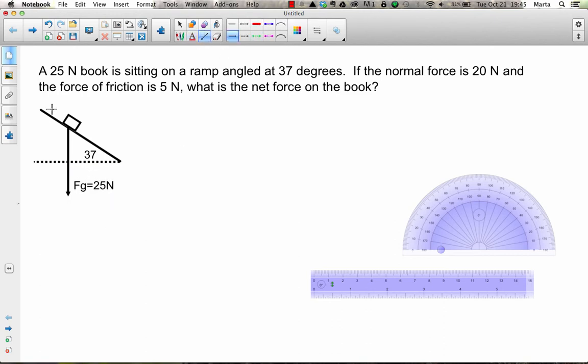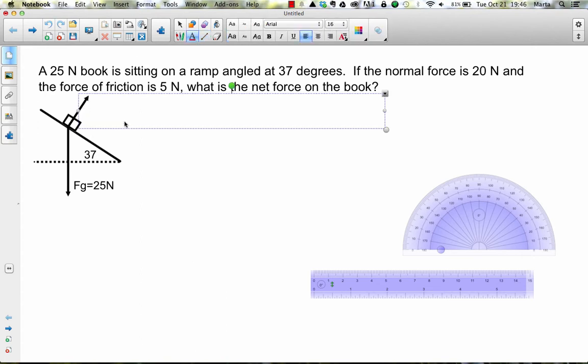And then the normal force always acts perpendicular to the surface. So I'm going to draw an arrow that sticks straight out from the ramp. When we were in one dimension, that force typically just went straight up, but in two dimensions, it's going to be angled along whatever the surface is.